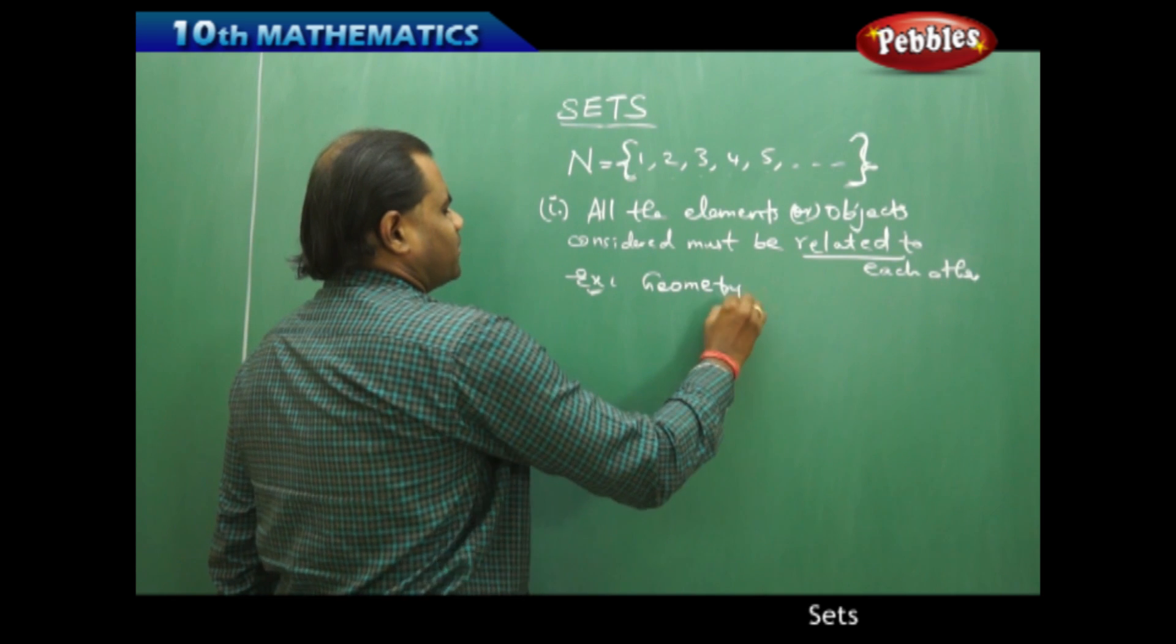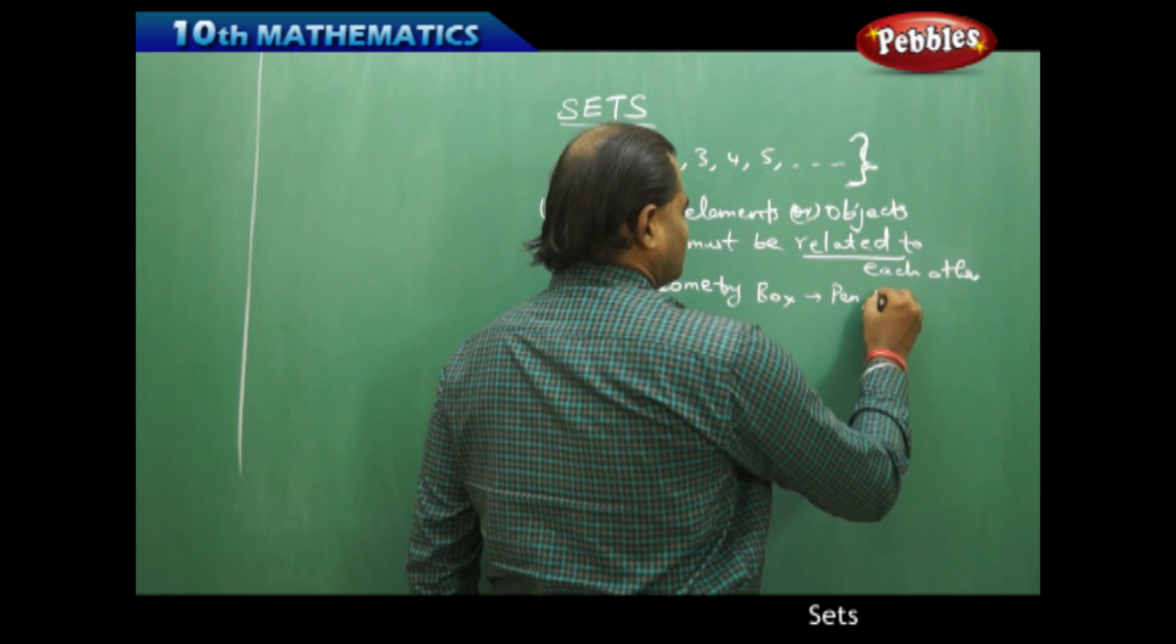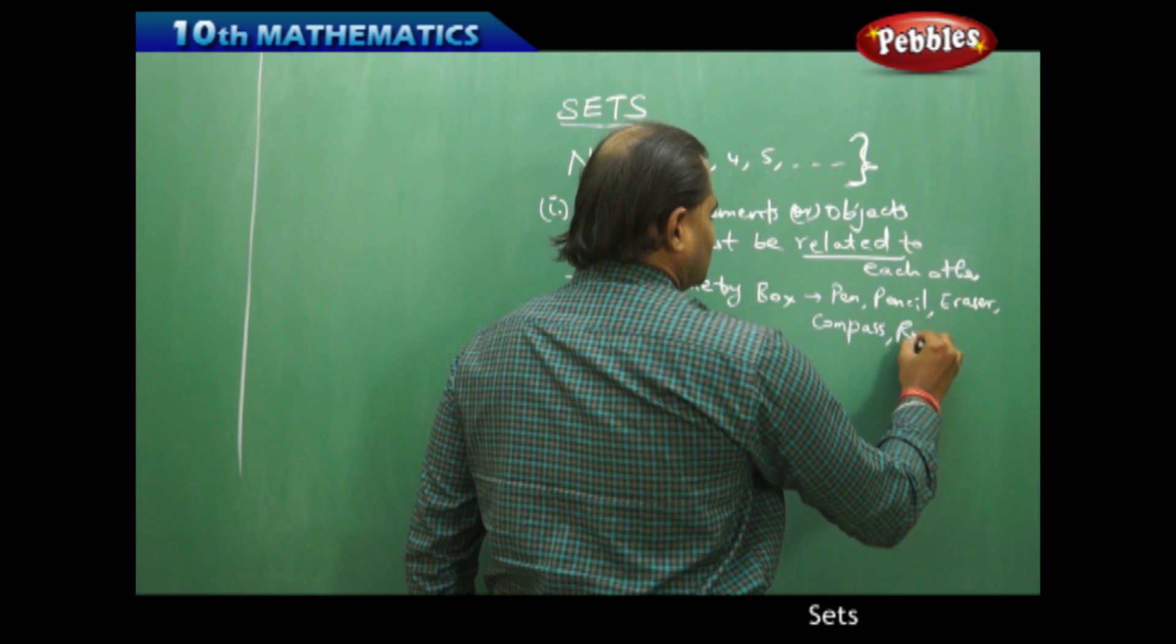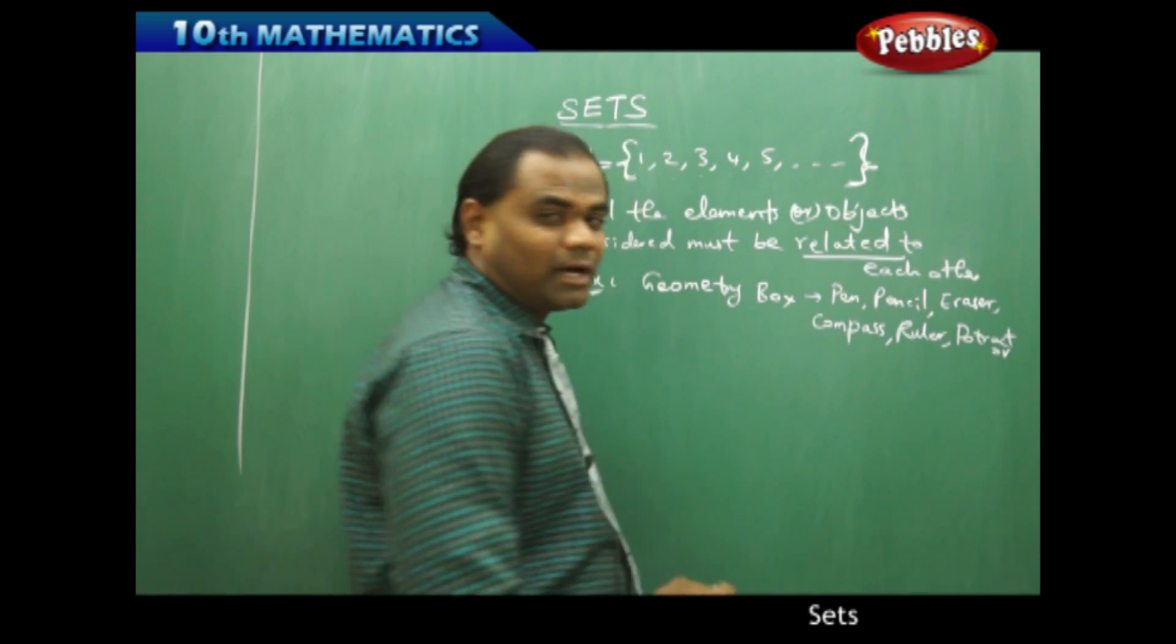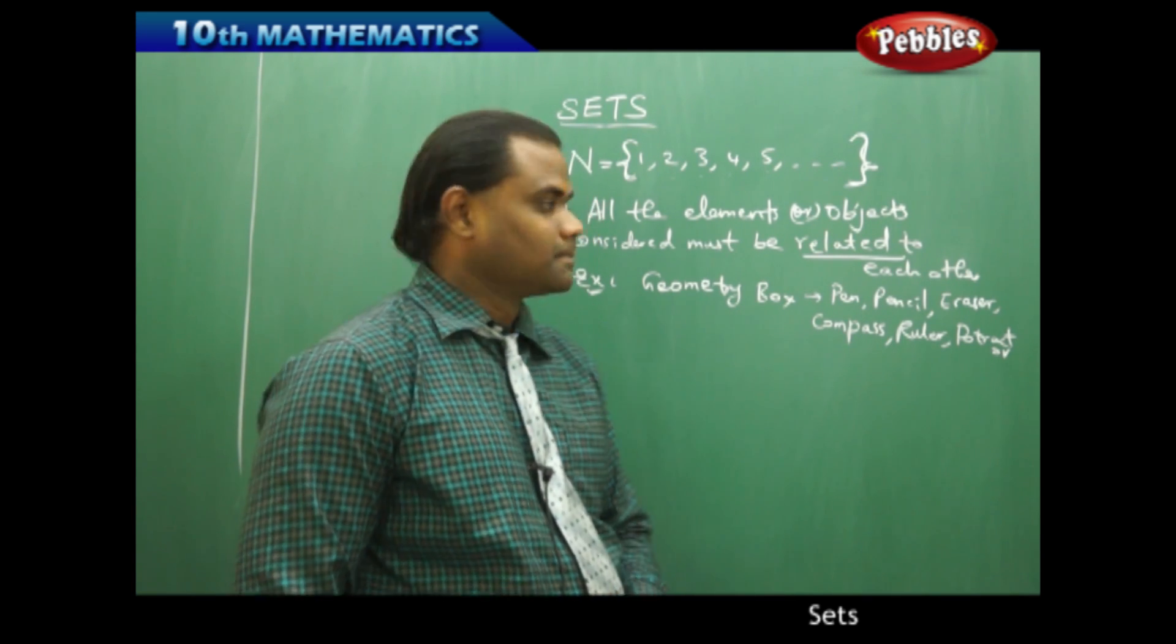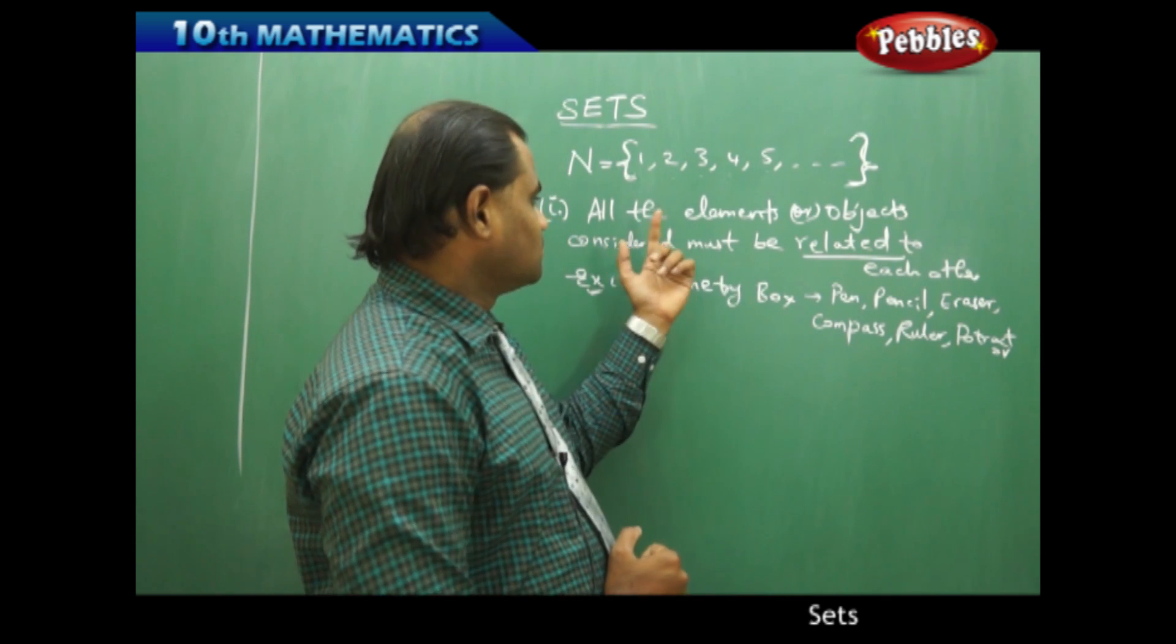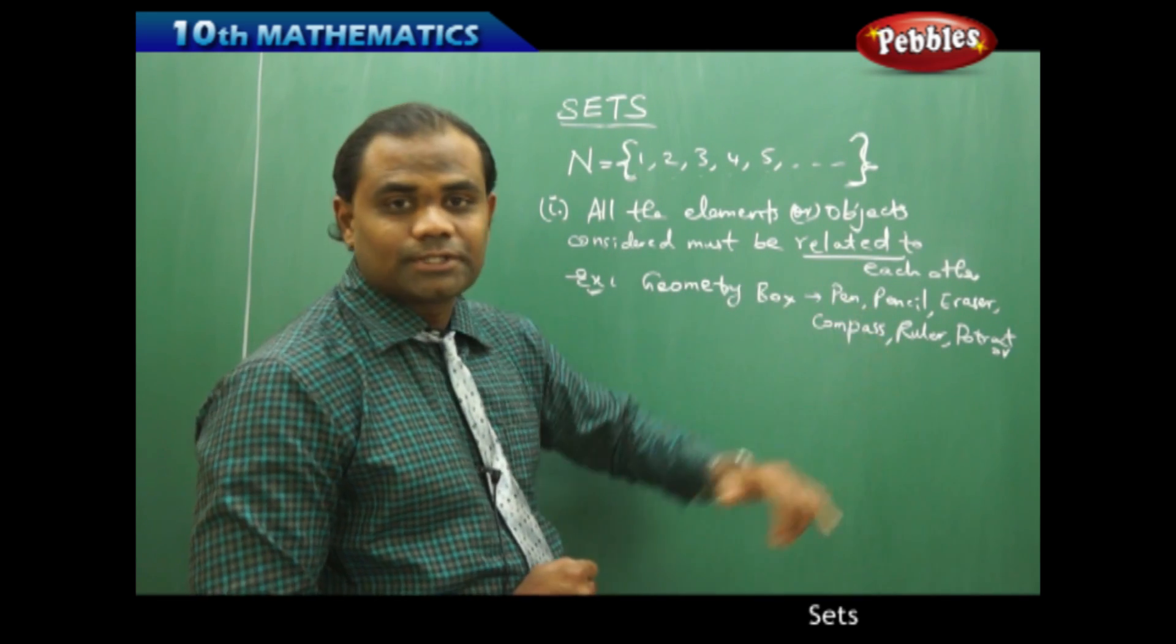For example, when I take the geometry box, an instrumental box, then I have a pen, a pencil, an eraser, a compass, a ruler, a protractor. They are all part of the geometrical instrument box which we use in construction of geometrical figures. So these are related to each other. So when they are written in set form definitely form a well defined collection of objects. Therefore, the first property which defines that the elements or objects which are considered must be related are very much related here.